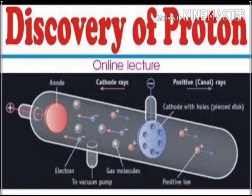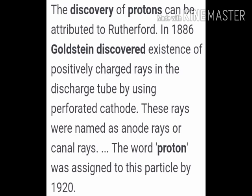Discovery of protons: the same cathode ray tube was used by Goldstein. He found that when the cathode was perforated, some beam or particles were seen coming from the anode passing through the perforated cathode. He called them canal rays, and later proved that these were protons. In 1886, Goldstein discovered the existence of positively charged rays using a perforated cathode. These rays were named anode rays or canal rays. The word proton was assigned to this particle in 1920, having positive charge.